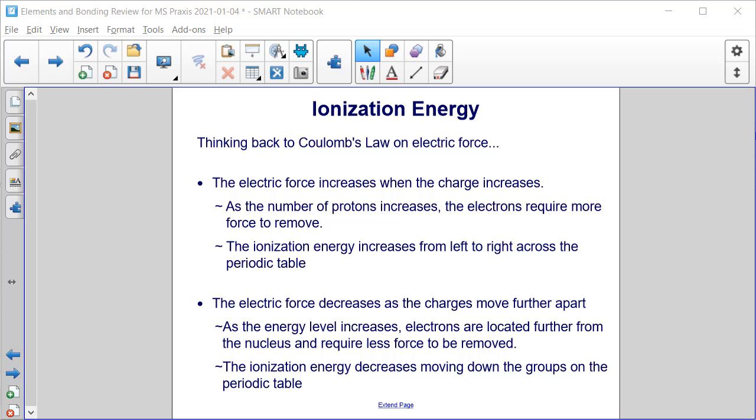As the energy level increases, as you go from energy level 1 to 2 to 3 to 4 and so on, electrons are located further and further from the nucleus and require less force to be removed. As a result, the ionization energy decreases moving down the groups on the periodic table.